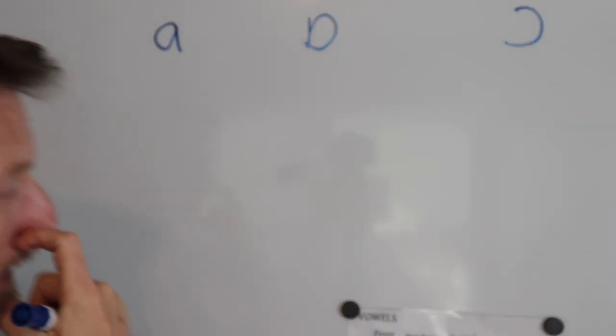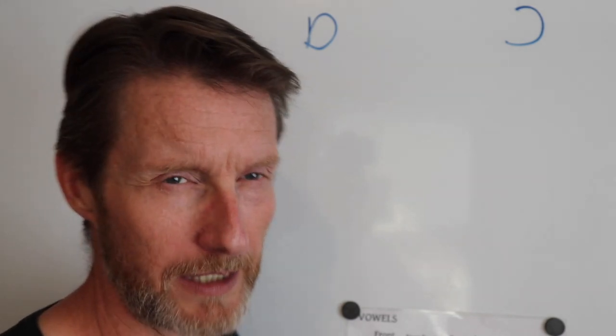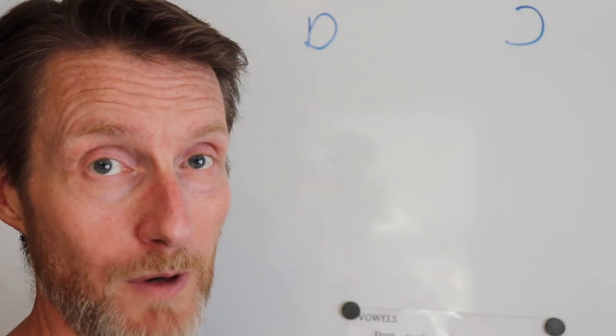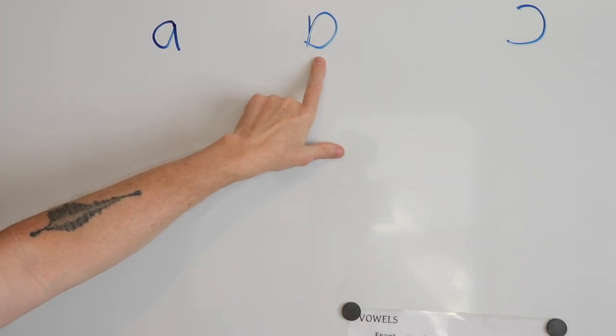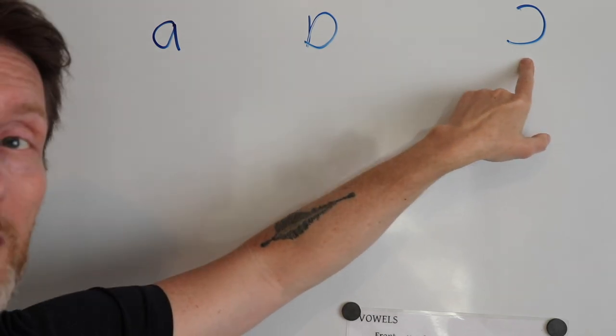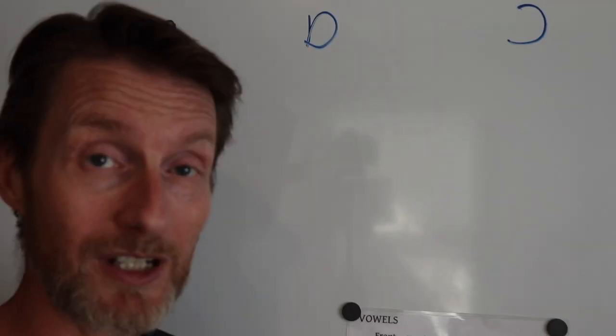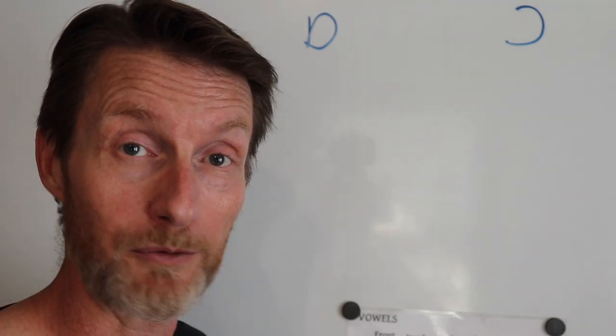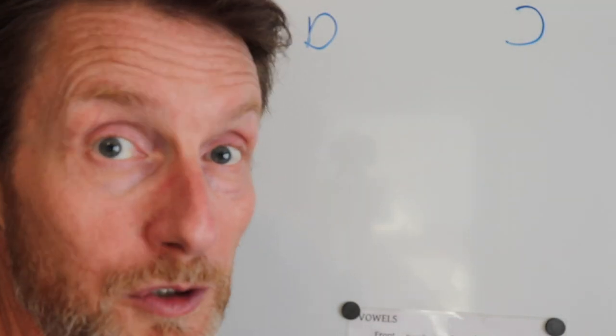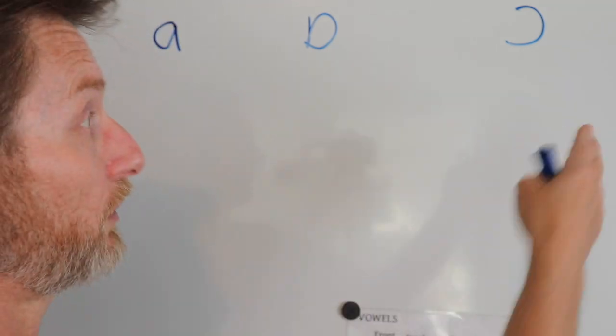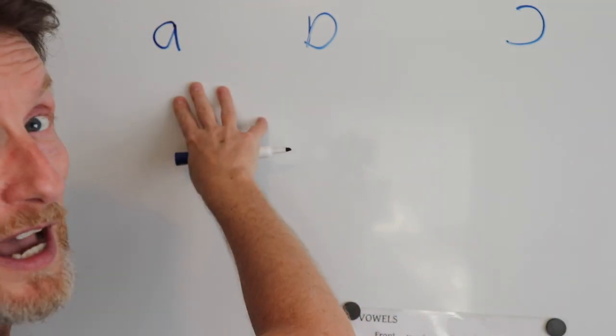There's a guy named Arthur Lesak who created this numbering system for a variety of vowels, and he called this one the five, this one the four, and this one the three. I appreciate that numbering system because it gives a shorthand to talk about it rather than script A, turn script A, open O, which can be confusing. So we're going to call them the three, the four, and the five.